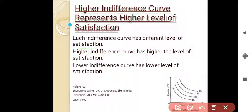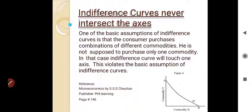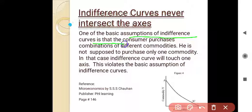Indifference curves never intersect the axis. One of the basic assumptions of indifference curve analysis is that the consumer purchases a combination of different commodities. The consumer is not supposed to purchase only one commodity — in that case, the indifference curve would touch one axis, which violates the basic assumption of indifference curves.